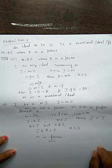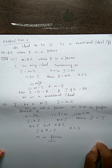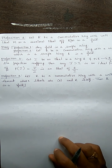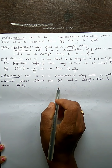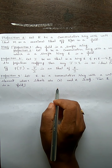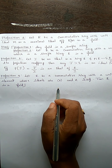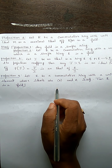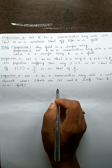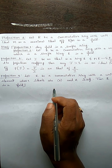That proves Proposition 3: an ideal M in Z is a maximal ideal if and only if M equals pZ where p is a prime. Now let us move to Proposition 4. The statement is: let R be a commutative ring with unit, and an ideal M is a maximal ideal if and only if R by M is a field.